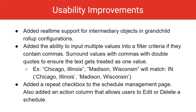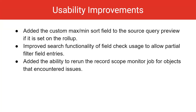There's a new Repeat checkbox on the Schedule Management page. We've also added an Action column that allows users to edit or delete a schedule. We've added the custom max/min sort field to the source query preview if it is set on the roll-up. Improved search functionality of field check usage now allows partial filter field entries. You can now rerun the record scope monitor job for objects that encountered issues.